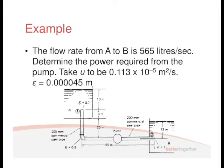It says the flow rate from A to B is 565 litres per second. Determine the power required from the pump, and we've got our, anybody want to know what that term is, that new term, what is it? Kinematic viscosity, that's right. We covered that in the first week of this semester. It says for a commercial steel pipe we've got epsilon value of 0.000045 metres.